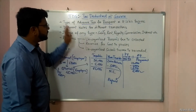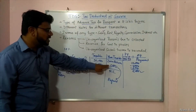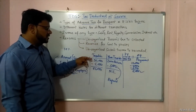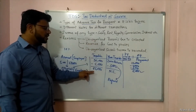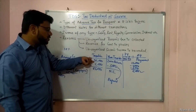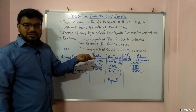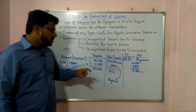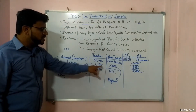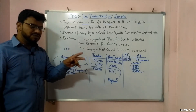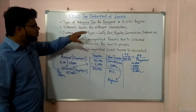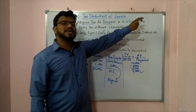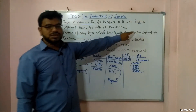This is the concept of TDS. TDS is as good as your advance tax. You have paid 5,000 earlier; now you only have to make 85,000 payment, so your total tax liability is 90,000. This is how you understand TDS. TDS concept is only this much — there is no difficulty in it. This is with regards to your Income Tax Act 1961, TDS concept.